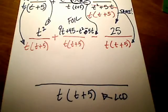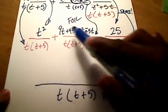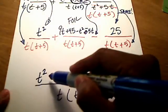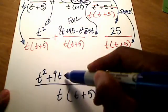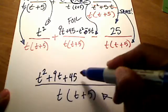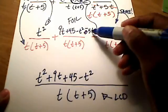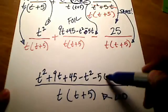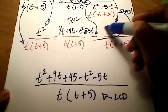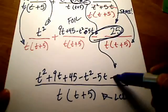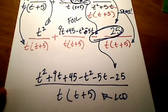So now let me clean up all of this top stuff. If all my numerators I'm going to combine by writing it as t squared plus 9t plus 45 minus t squared, let's see, minus 5t, and that minus sign goes with the 25. Do you see that right there? So that's minus 25 at the very end. That minus sign goes with it.